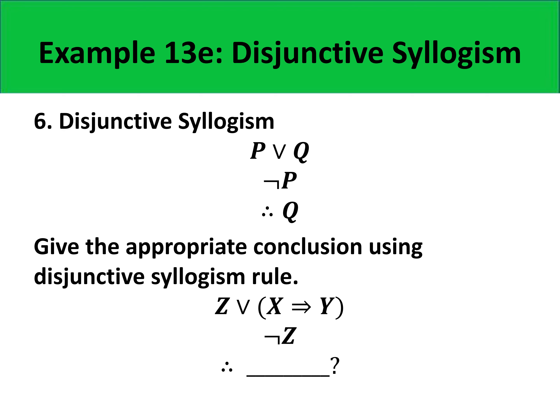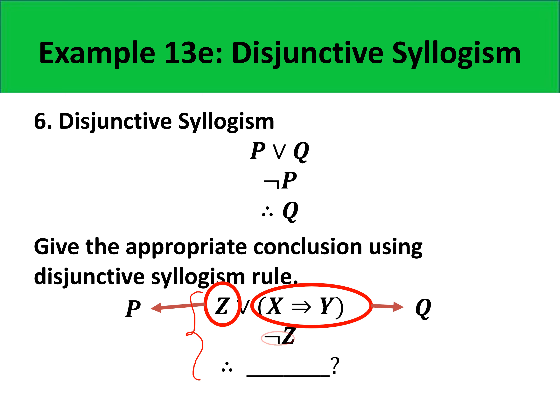Let us identify the correct conclusion for this particular argument. Here, Z takes the role of P, and the quantity X implies Y takes the role of Q — that is the first premise. Our second premise is negation of Z, which corresponds to negation of P. So by disjunctive syllogism, the conclusion should be Q, which corresponds to X implies Y.